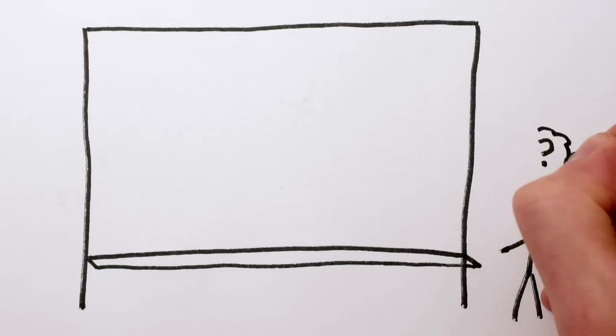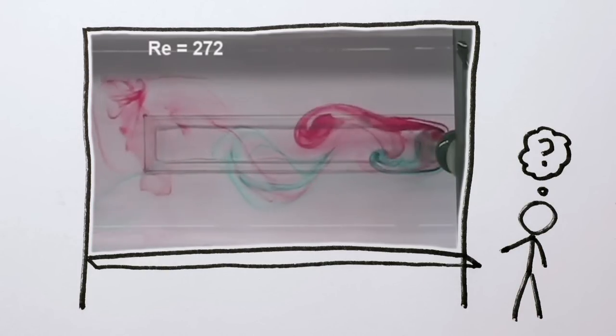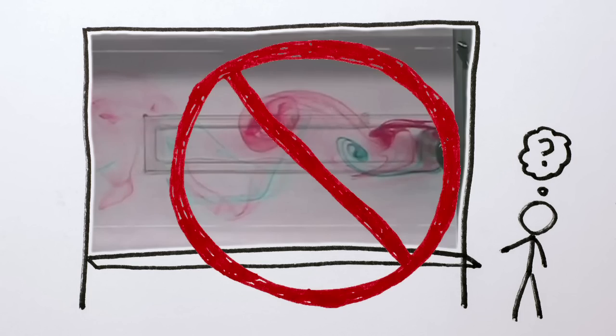It's also tempting to think that the bridge collapsed because of vortex shedding, a cool looking fluid process where vortices take turns sloughing off the edge of an object. But that's not right either.